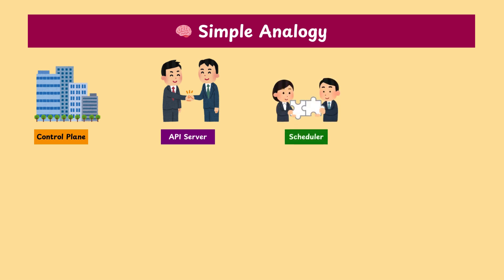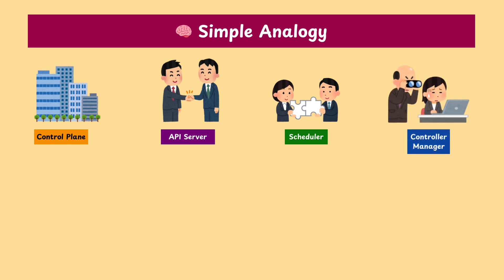The scheduler acts as the task assigner. Whenever new work comes in, they check which team or worker node has the bandwidth and assign the task there. The controller manager is the operations supervisor — constantly monitoring the whole system. If something fails or stops running, they ensure it's fixed or restarted right away.